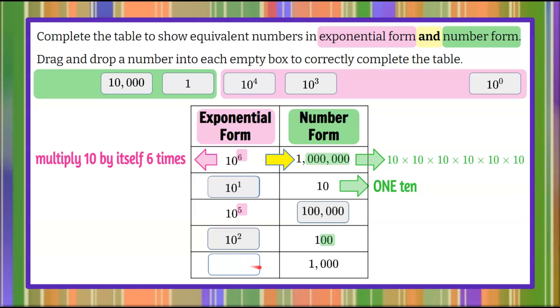And our last box, we have 1,000 that we're looking to fill into this, which has three zeros. So we're looking at—here's our 10, 1, 2, 3. So here is 10 to the third, which is equivalent to 1,000. And there you have our completed table.